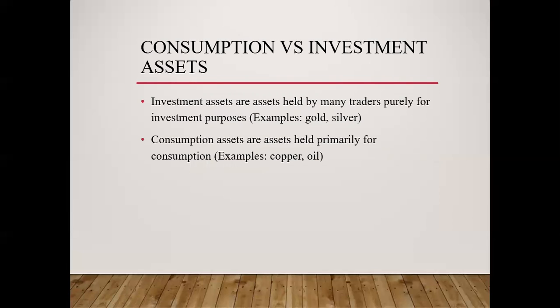One thing to point out is this difference between consumption and investment assets. A consumption asset is something that you're using — oil, copper, pork bellies that we turn into bacon, anything that we're going to use up. Things like gold, platinum, and palladium may just be held for investment purposes. If you have a large number of people holding it purely for investment — to hedge currency risk or something like that — then we call those investment assets.